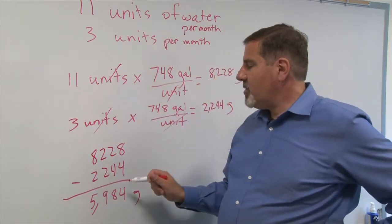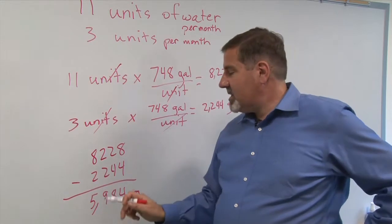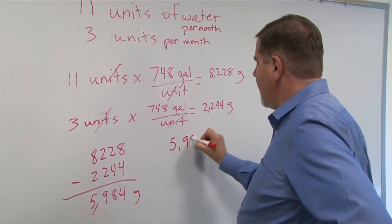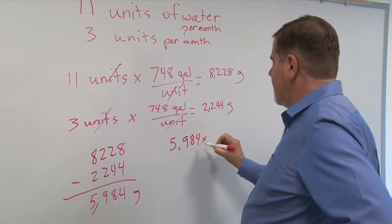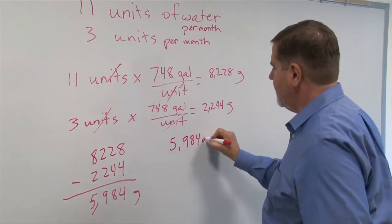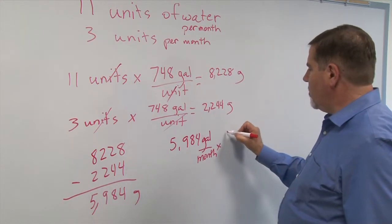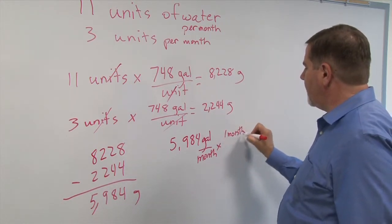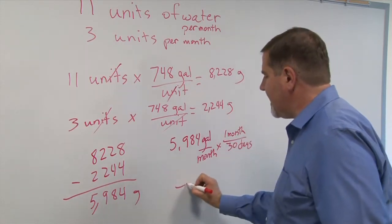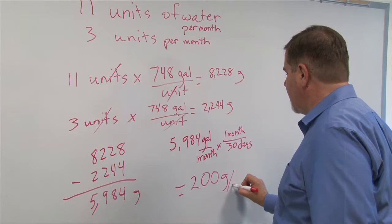The last part of this question is, what does that mean in terms of gallons per day? Well, this was gallons per month, so let's take 5,984 gallons per month times one month divided by 30 days. And what that gets us is 200 gallons per day.